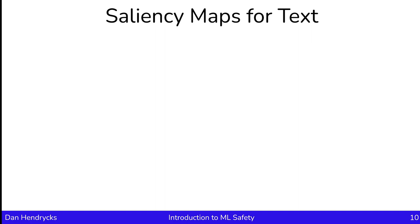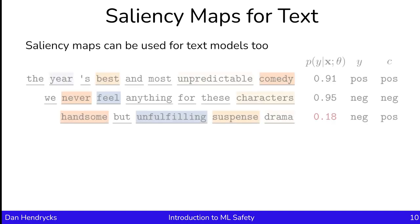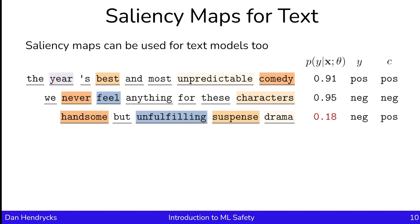Saliency maps aren't just for images — they're also used for NLP and text models. Here are saliency maps that correspond to a model that predicts the sentiment of a movie review. Looking at the last example: 'Handsome but unfulfilling suspense drama' has a negative classification. The word 'handsome' and 'suspense' are positively associated with a positive movie review, while 'unfulfilling' is associated with a negative movie review. The saliency map can tell us what tokens are salient for the classification and in which direction they push the model's prediction.